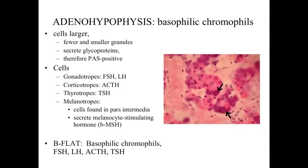The second category of chromophils are going to be the basophilic chromophils, basophilic because they're going to have a basophilic staining appearance. These cells are going to be larger than the eosinophilic chromophils, with fewer and smaller granules. The granules may be PAS positive because they're involved with secreting glycoproteins. The basophilic chromophils will be involved with secreting things like FSH (follicle stimulating hormone), luteinizing hormone, ACTH, and TSH — so that would be gonadotropes, corticotropes, or thyrotropes. There's also a category of basophilic chromophils within the pars intermedia which are melanotropes, involved with secreting beta melanocyte stimulating hormone.